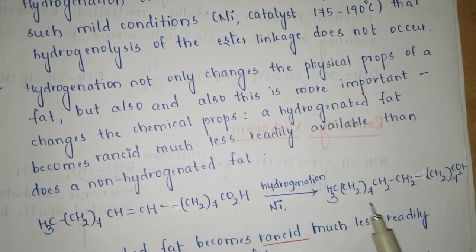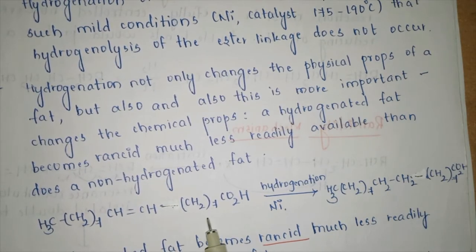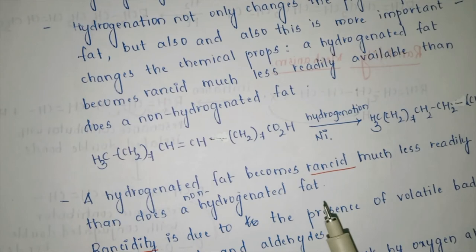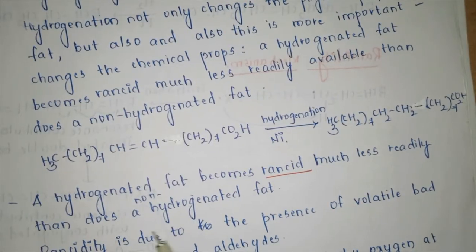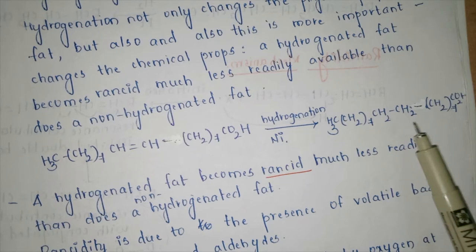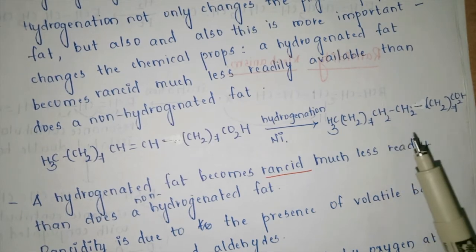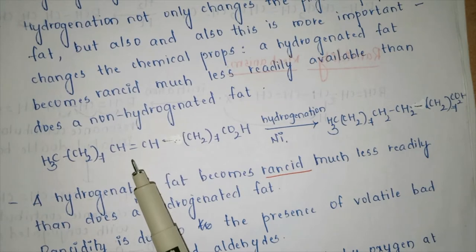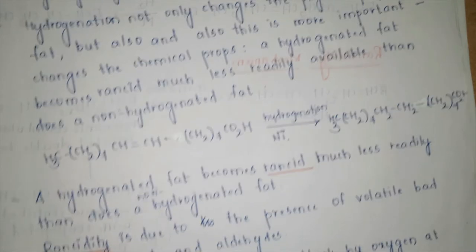When double bonds are converted to single bonds, there is no chance for oxygen to attack, meaning we can store the fat for a longer period. Comparing the two systems: a hydrogenated fat takes much longer to degrade and become rancid, whereas a non-hydrogenated fat, having double bonds, is easily attacked by atmospheric oxygen and degrades quickly.